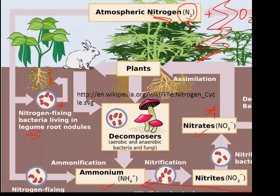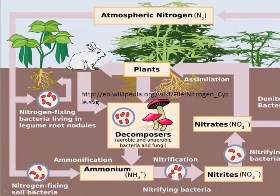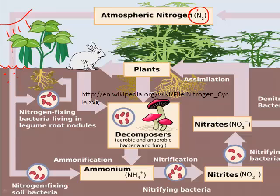The nitrogen-fixing bacteria living in the roots of these legumes provide nitrogen compounds in a form the plant can use, and the plant provides sugars — produced through photosynthesis — to the bacteria. That's the symbiotic relationship. The third way nitrogen fixation occurs is by cyanobacteria in water, usually fairly stagnant water like a pond. This bacteria performs photosynthesis and converts atmospheric nitrogen into ammonium as well.